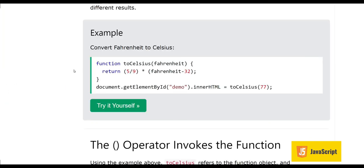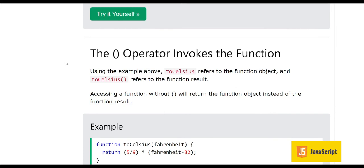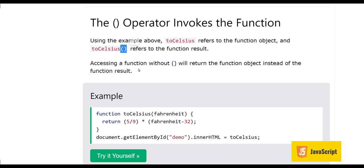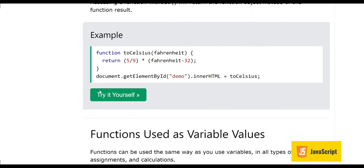This round bracket is actually an operator which invokes the function. Using the example of 'toCelsius': writing 'toCelsius' refers to the function object, while writing 'toCelsius()' with brackets refers to the function result. This is a very important concept: when you write just the function name it refers to the function object, but when you put two round braces after it, this refers to the result of the function.